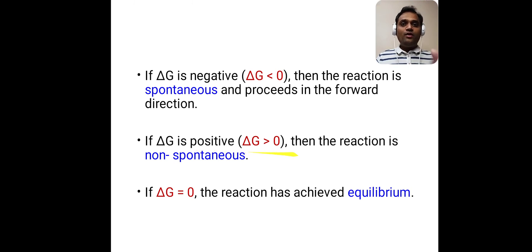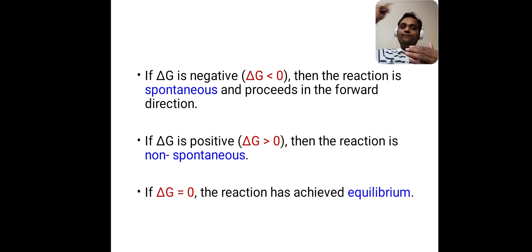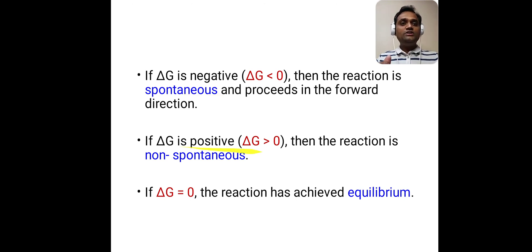Second, if delta G is positive — that is, delta G is greater than zero — then the reaction is non-spontaneous. For example, sending water from bottom to top cannot take place on its own accord; it is non-spontaneous. Third, if delta G is equal to zero, the reaction has achieved equilibrium. So these are the three conditions: delta G less than zero means spontaneous; delta G greater than zero means non-spontaneous; delta G equal to zero means equilibrium.